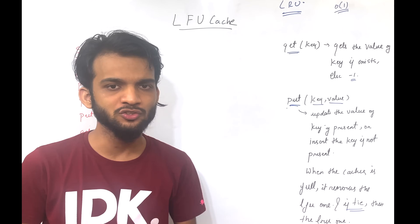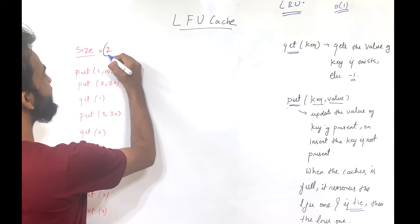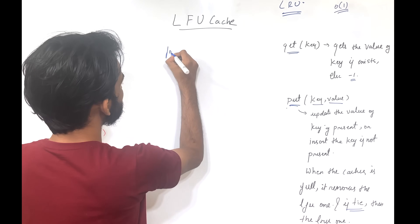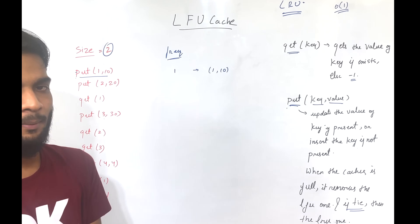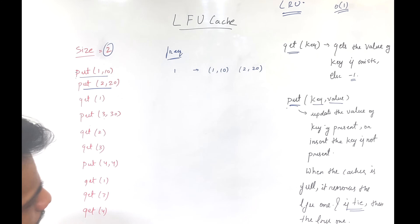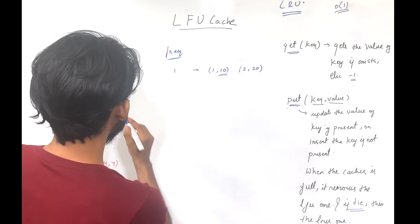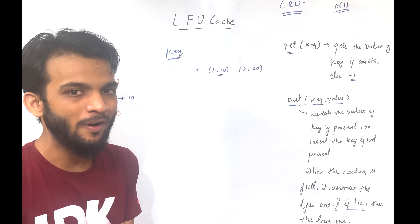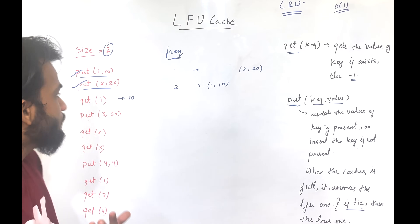Let's do a dry run so you understand the LFU cache in a much better way. Initially the size of your data structure is at most 2. First operation: put(1, 10) — there's one guy with key 1, value 10, frequency 1. Next: put(2, 20) — another guy with frequency 1, that's 2 of 20. Next operation: get(1) — 1 has value 10 so it returns 10, but since we accessed key 1 its frequency increases from 1 to 2.